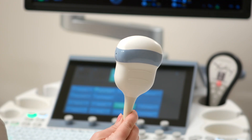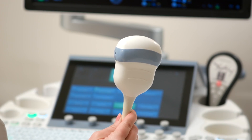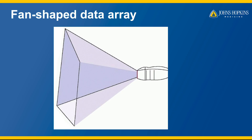The ultrasound probe used for these studies is a 4.8 MHz curved array transducer. This transducer generates a fan-shaped array of data in the plane of the transducer, creating a pyramid of 3D data that can be manipulated after acquisition.